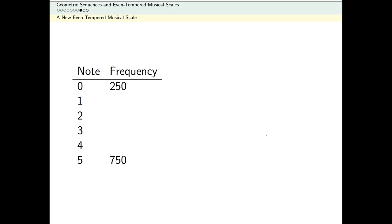And let's say we want to divide this interval into five equal intervals. Using exactly the same method we did before, you should be able to figure out the frequency of every note in between 250 and 750. So pause the video, figure out the ratio between consecutive notes in this new scale, and write down the frequency of these notes.